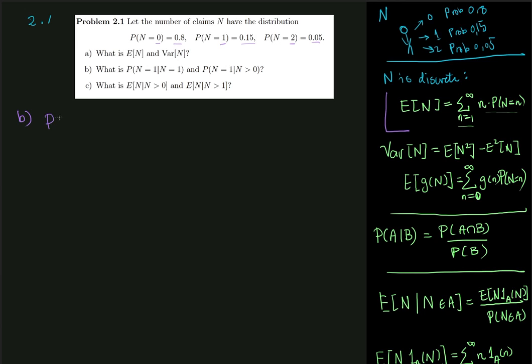So we want to find the probability that N is equal to 1 conditioned on the fact that N is equal to 1. And I'll go on to this part just in a second.